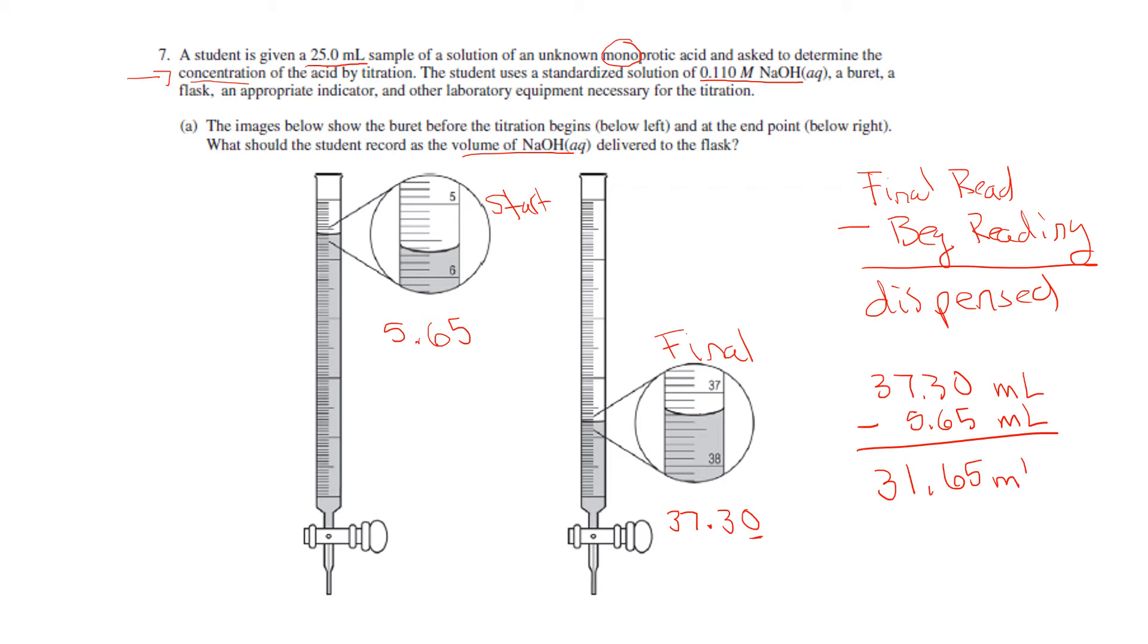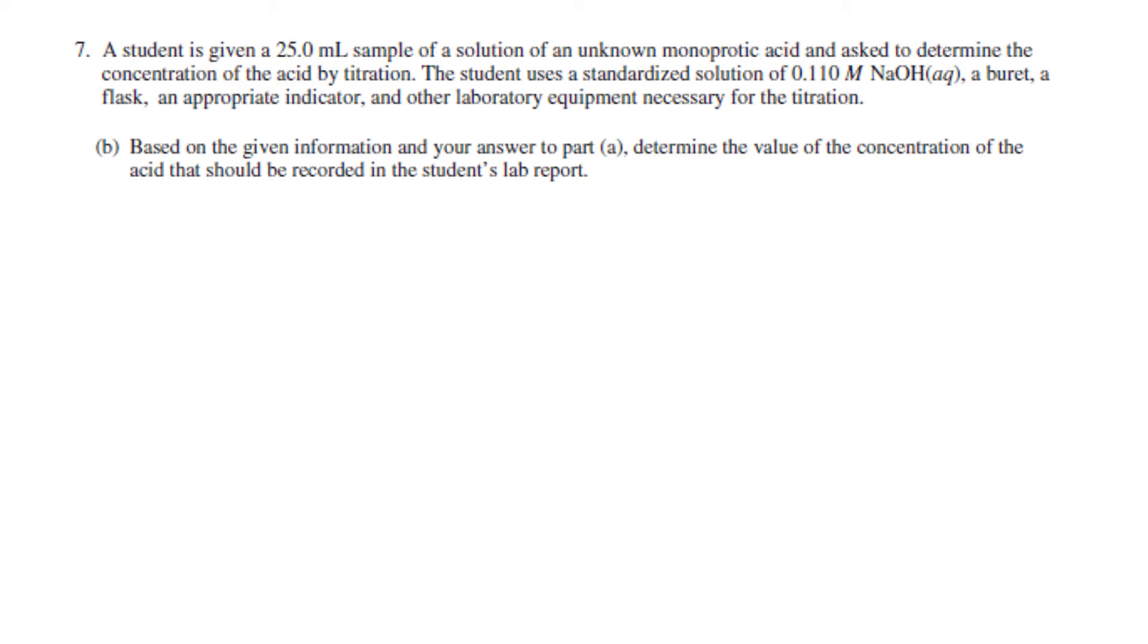If I subtract one from the other, 31.65 milliliters of my base has left this burette for the titration. So Part B, based on the given information and your answer to Part A—so Part A I said there was 31.65 milliliters of NaOH.